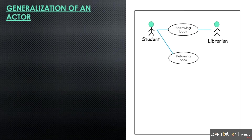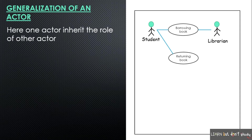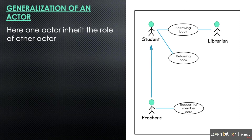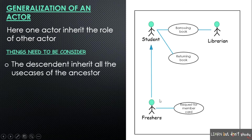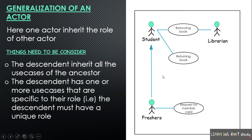Next is generalization of an actor, where one actor inherits from another. For example, student is the base actor, and Freshers inherit from student. A fresher can access all use cases a student can, but also has a specific use case: requesting a member card, which is unique to freshers.